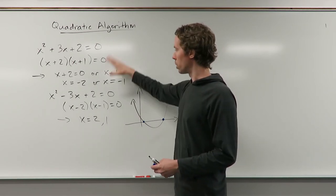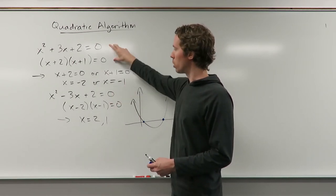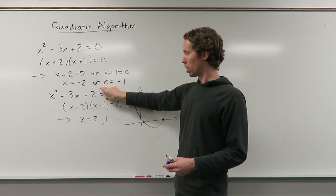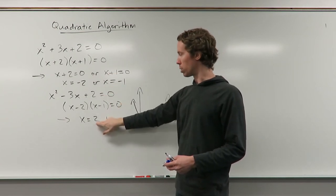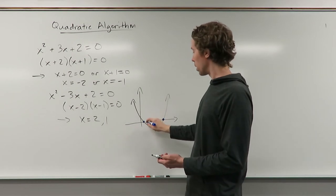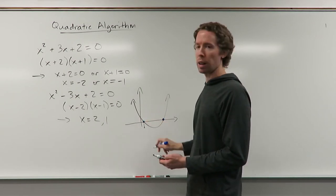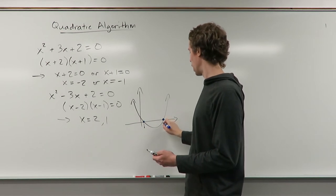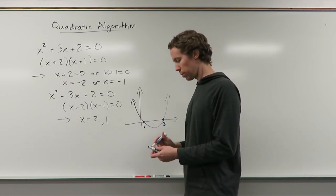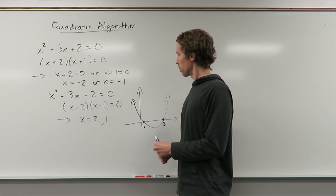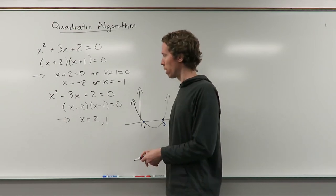So what I'm really looking for is where the graph crosses zero. When we solved this, we got x equals 2 and x equals 1. So what that would mean is that our graph crosses the x-axis at x equals 1 and hits at x equals 2.